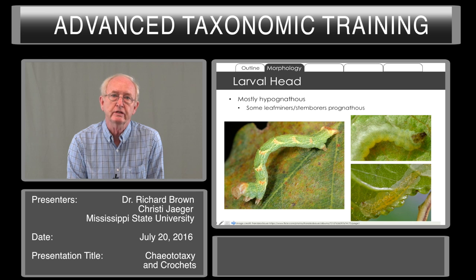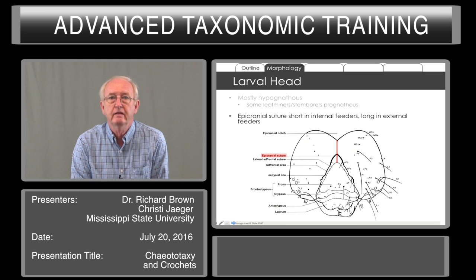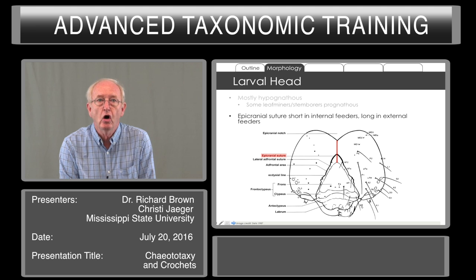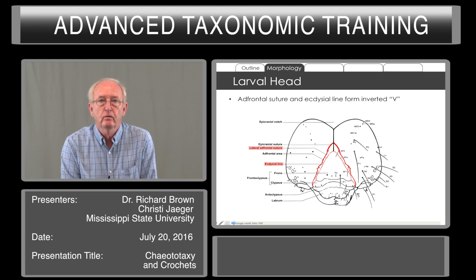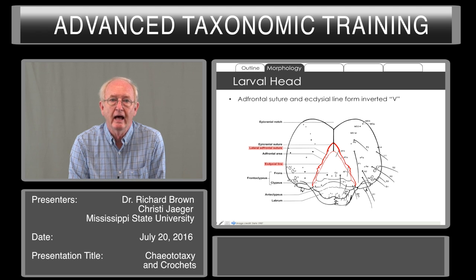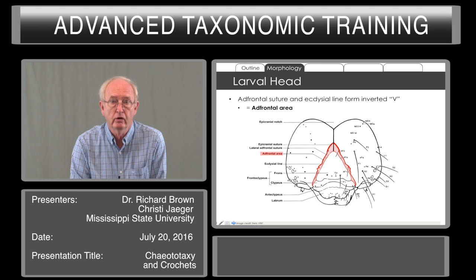However, some leaf miners and stem borers have mouth parts directed forward, or prognathous. The epicranial suture, shown as a red line, is short in internal feeders but long in external feeders. We see two red lines: the wide red line is the adfrontal line, and the narrow red line is the adfrontal suture. If this is colored in, we see an inverted V that is characteristic of the Lepidoptera. Some Coleoptera have an inverted V but only with one line instead of two.